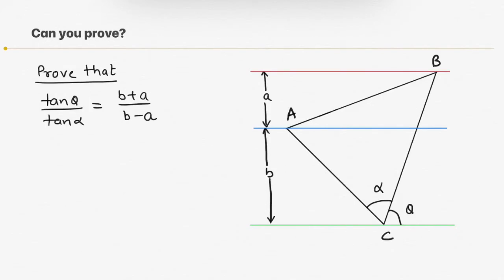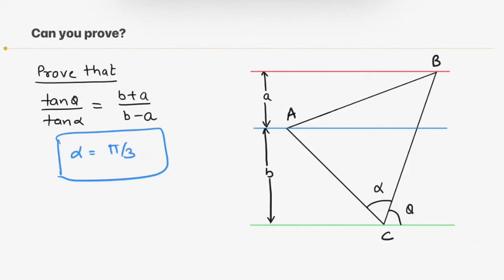In the given question one of the angles of the triangle is alpha. Since the triangle is equilateral, all the angles will be equal to 60 degrees. Hence alpha equals pi by 3. Now let me assume the length of the sides of this equilateral triangle is K. So length of AB will be K, length of BC will be K, and length of AC will be K.